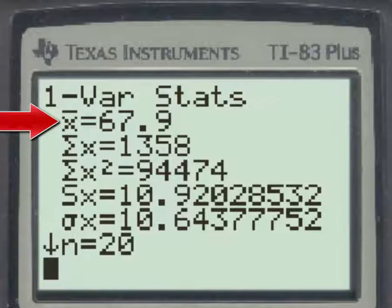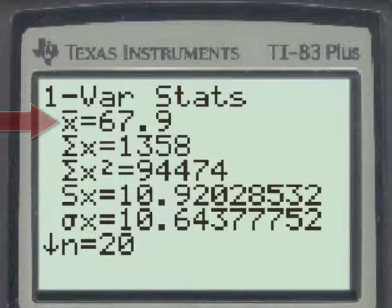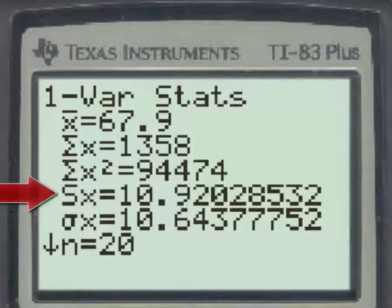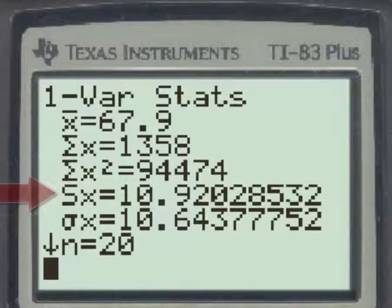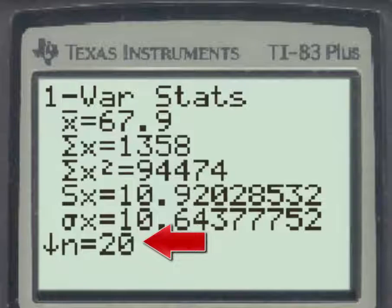When we hit enter, here we have the sample mean, which is given as x-bar of 67.9. The sample standard deviation is 10.92 and change, and n equals 20 tells us that the sample size is 20. In other words, the number of data values are 20.